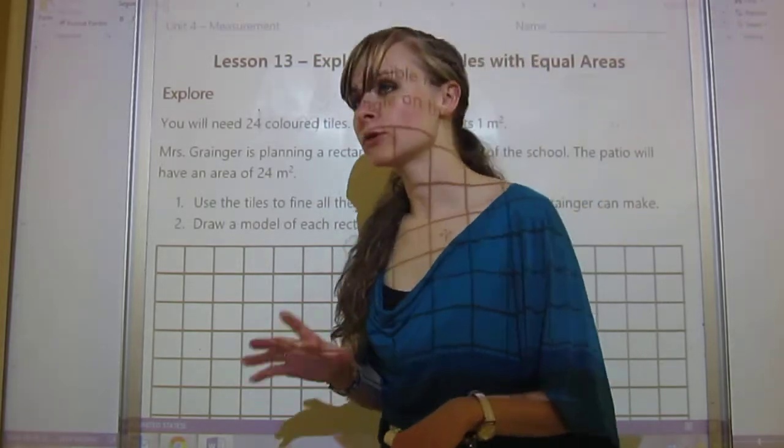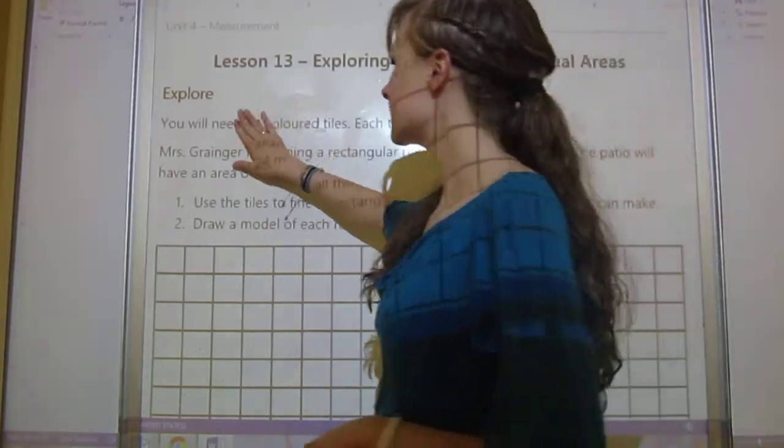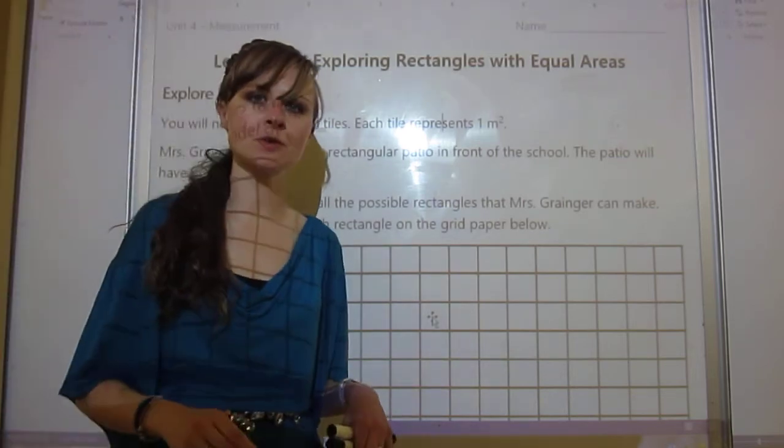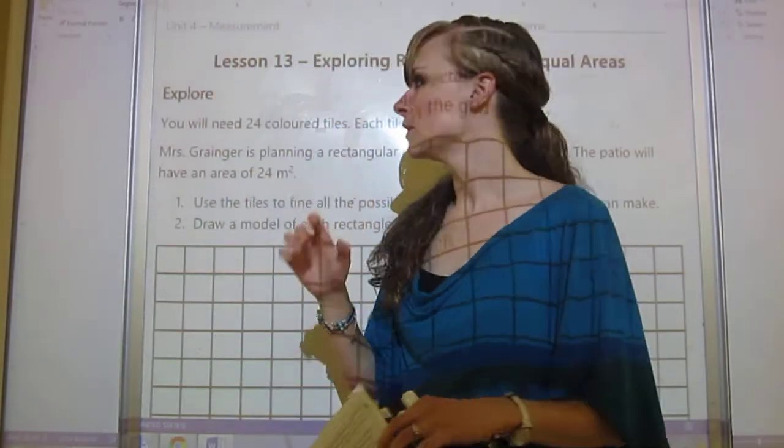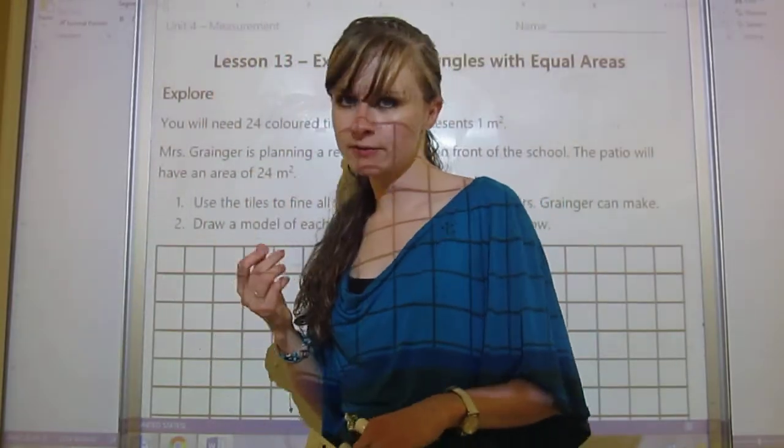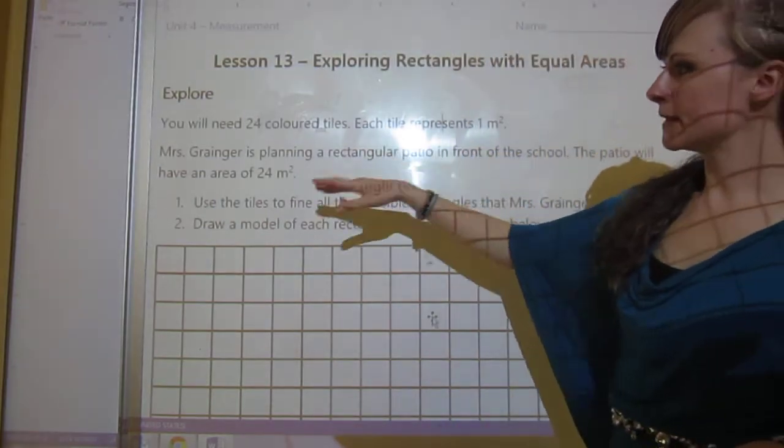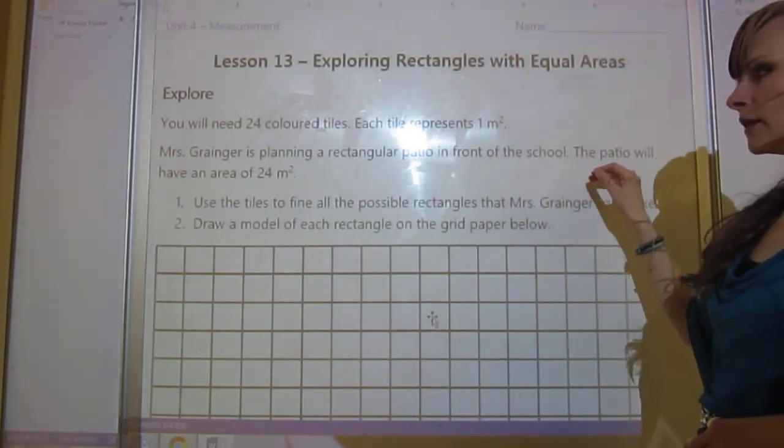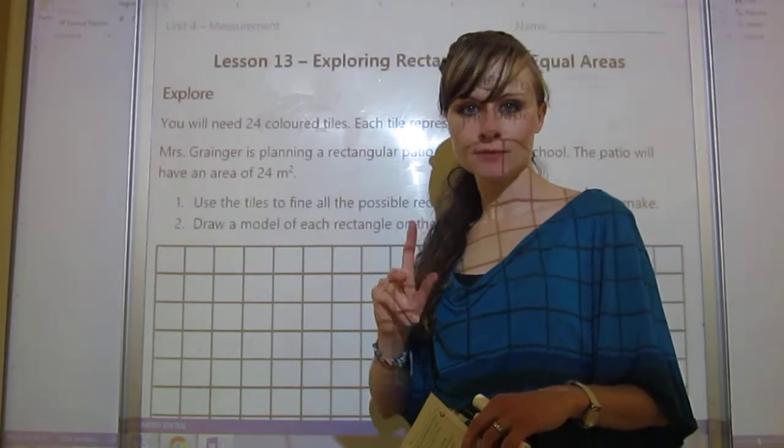In order to start this lesson, we've got an explore. It says you will need 24 colored tiles. Each tile represents one meter squared. I didn't grab them for the video, but they're about this big. You could also use centimeter squares if those are readily available. Mrs. Granger is planning a rectangular patio in front of the school. The patio will have an area of 24 meters squared.